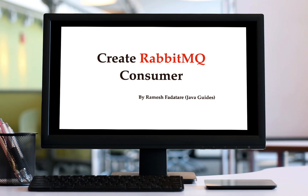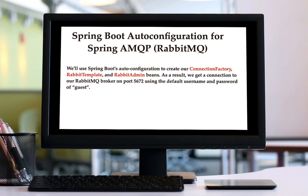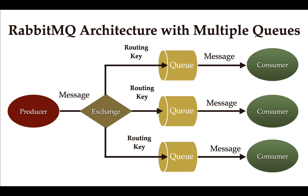Hi, welcome back. In this lecture we'll see how to create a RabbitMQ consumer to read or consume messages from the queue. Looking at the architecture, so far we have configured the queue, exchange, and routing key, and we have also created a producer to send the message to the queue. In this lecture we will create a consumer to consume that message from the queue.